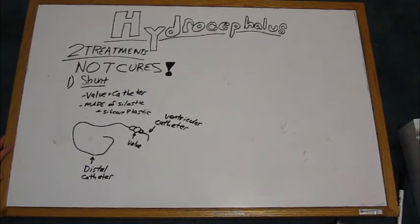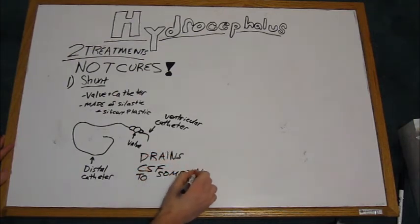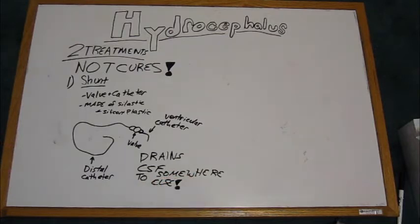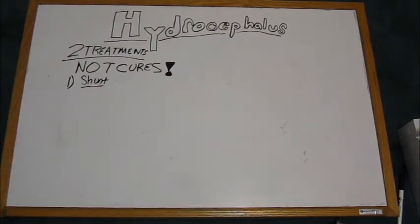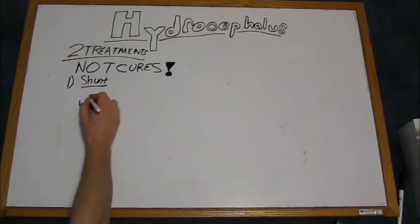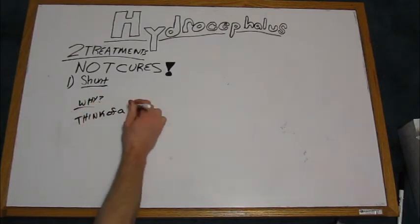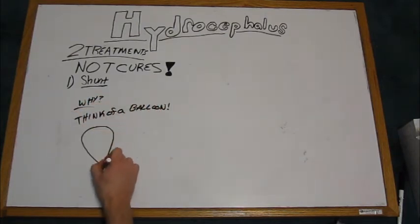There are many different kinds of shunts, and what kind you have depends on where the cerebrospinal fluid drains to. So, if it drains to your abdomen, you would have a ventriculoperitoneal shunt, or a VP. Now, what does a shunt do?